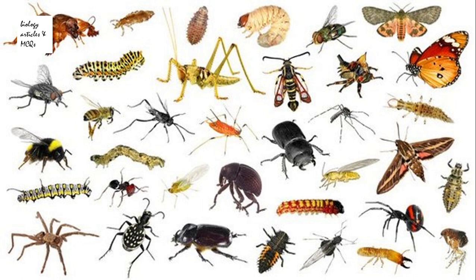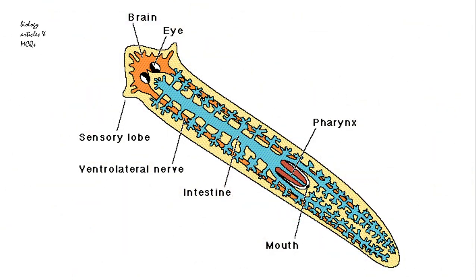Now let's move towards the digestive system of planaria — which are the main parts. The digestive system of planaria consists of a single gut opening, meaning there is a single opening that serves both as a mouth and the anus, and that single opening is present in the middle of the animal.